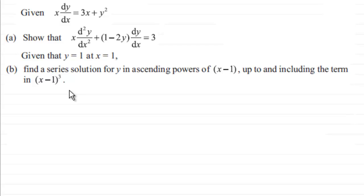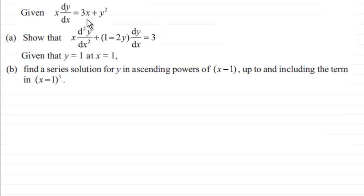Welcome back. Let's see how we do this one. First of all, we're given that x times dy/dx equals 3x plus y squared, and we've got to show that we get a particular relationship. To do this, we take this equation — call it equation 1 — and differentiate it with respect to x.